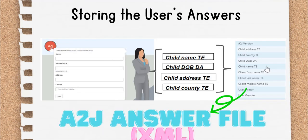The user is presented with those questions in the interview. Whatever responses they type into those blanks on the screen are captured in the underlying variables. Those variables are stored in the A to J answer file. That answer file, the variables and their paired responses, is in a file format called ANX, which is a form of XML.